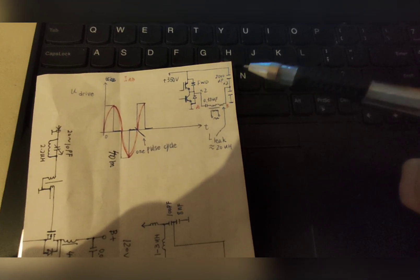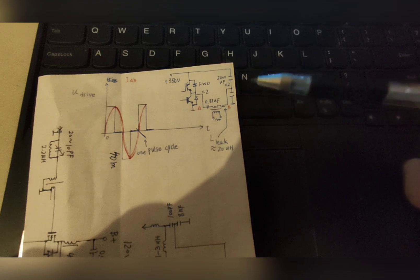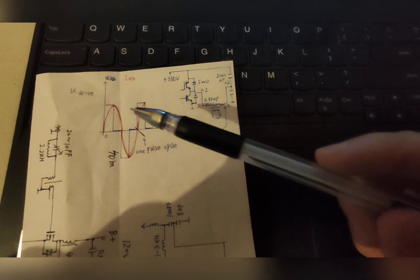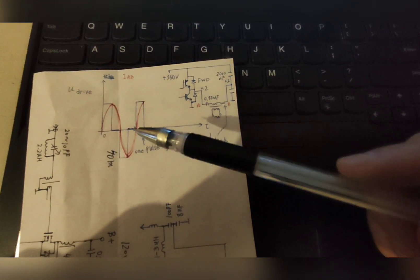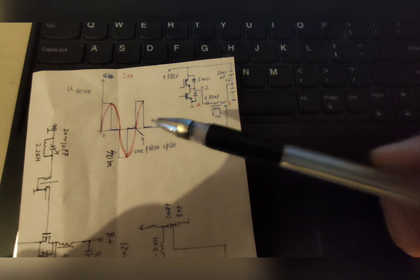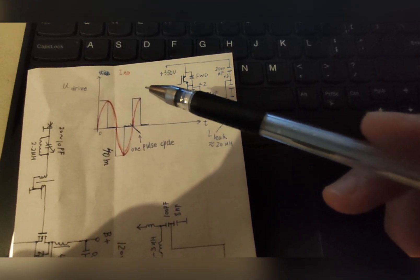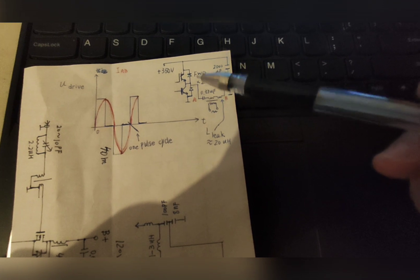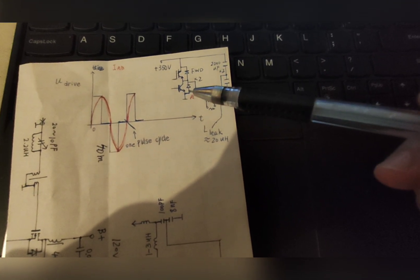This is a simple half-bridge circuit as you can see, and the square wave here is the driving wave that goes into the GDT, which means the gate drive transformer, to drive the two IGBTs independently.